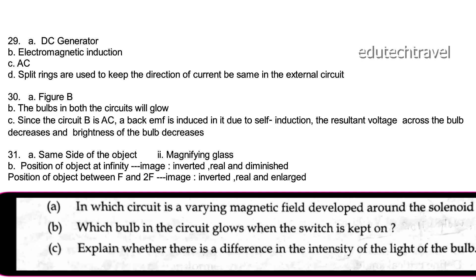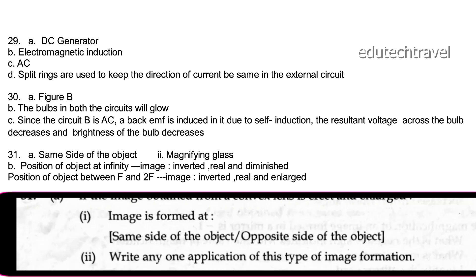If the image obtained from a convex lens is erect and enlarged, the image is formed on the same side of the object. One application of this type of image formation is a magnifying glass.